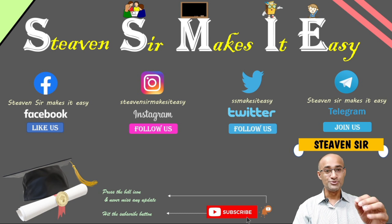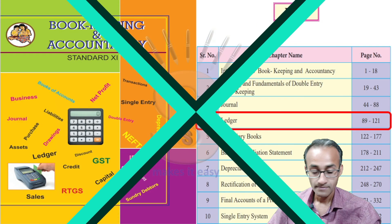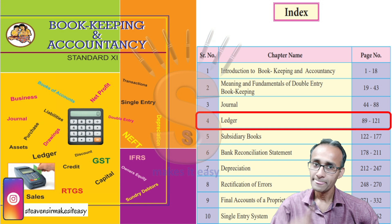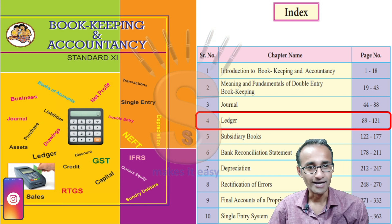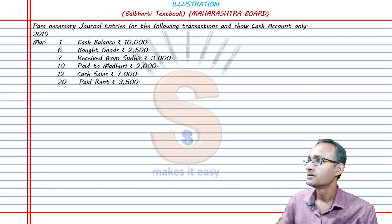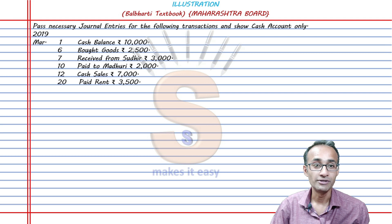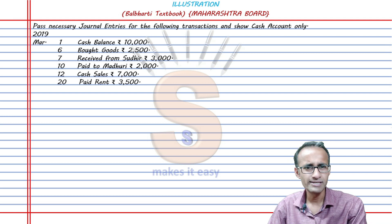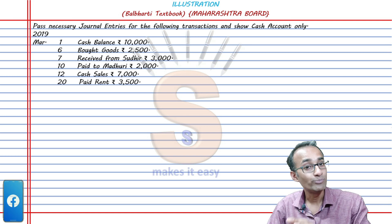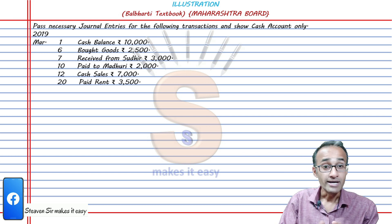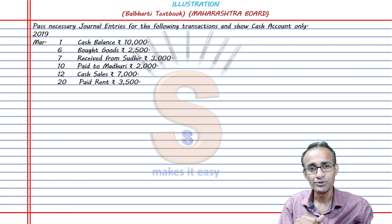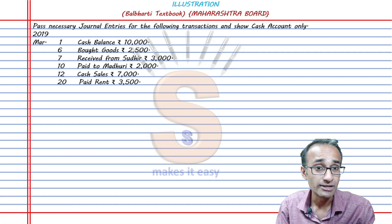Hello and welcome back to Steven Sir Makes It Easy. Today we will move a little further ahead in the ledger chapter with practice of one problem. What I mean by past necessary: journal entries. We have multiple questions here where under ledgers, having a journal is very important. Sometimes it will be solved roughly, sometimes in fair work, but it should be solved — doing the ledger directly without it is a little risky.